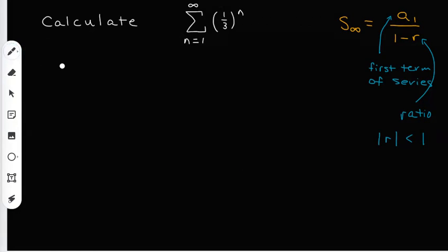So let's try this one. I need to calculate the infinite series of the fraction one-third raised to the n power. Now, this bottom number is going to be n equals 1. So that's going to be our starting point. And at the top, I'll put my infinity symbol.